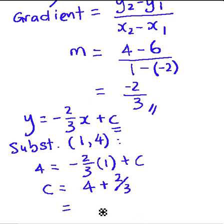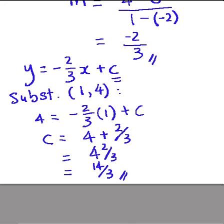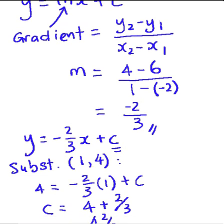And if we simplify, you will get 4 and 2/3, or if you want you can put it in the improper form, which is 14/3. So this is your c. Finally, what we need to know is that our equation for the straight line is...